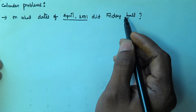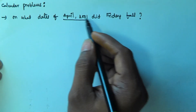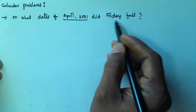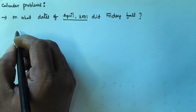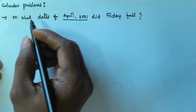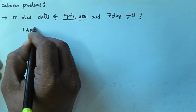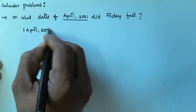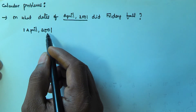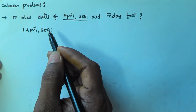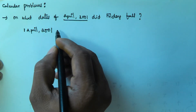We have to find on which dates of April 2001 Friday will fall. For that, first of all we will find the weekday of 1st April 2001. Based on that, we can find on which date Friday will fall.